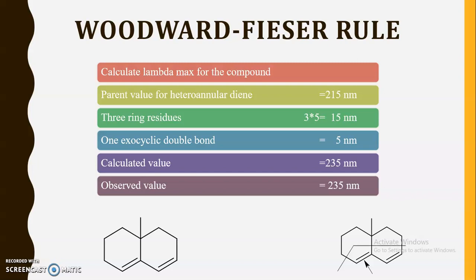In this way we have to check whether alkyl substituents are there, whether ring residues are there, whether an exocyclic double bond is present, or whether endocyclic double bonds are present in the given ring.